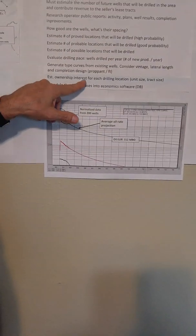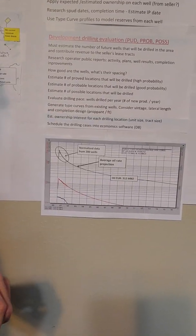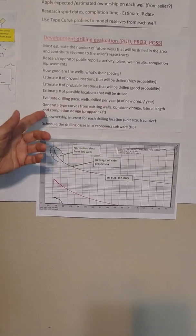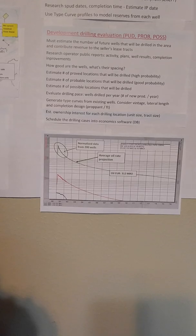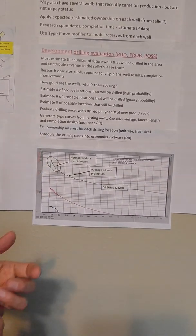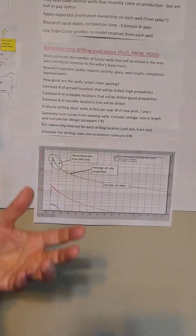A big part of it is we have to estimate the ownership interest for these future wells. We can look at the unit size, the tract size, that sort of thing to get an estimate. Then we have to schedule all this drilling into the economic software to start generating reserves.